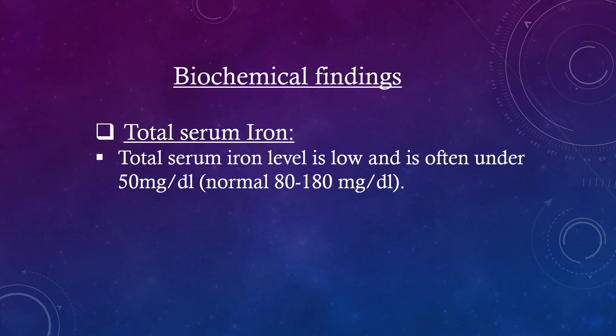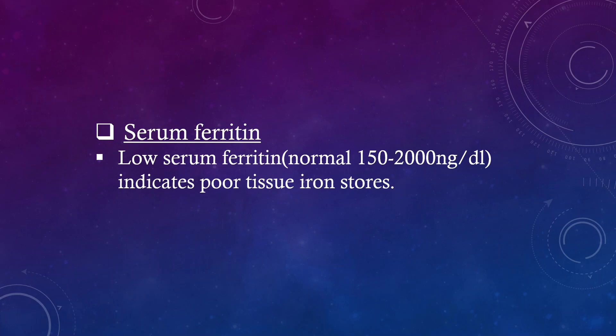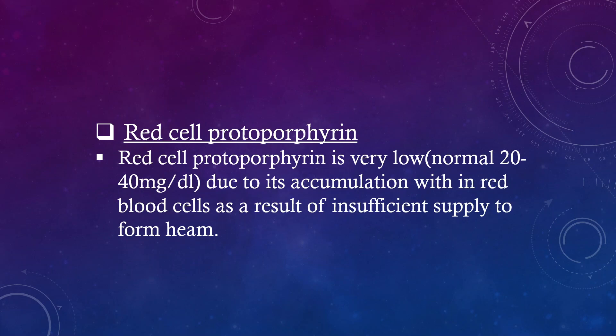Biochemical findings: Total serum iron level is low, often under 50 mcg per dl; normal is 80 to 180 mcg per dl. Total iron binding capacity is high; normal is 250 to 450 mcg per dl, rising to give less than 10% saturation; normal saturation is 33%. Serum ferritin is low; normal is 150 to 2000 mcg per dl, indicating poor tissue iron stores. Red cell protoporphyrin is very high; normal is 20 to 40 mcg per dl, due to its accumulation within red blood cells as a result of insufficient supply to form heme.